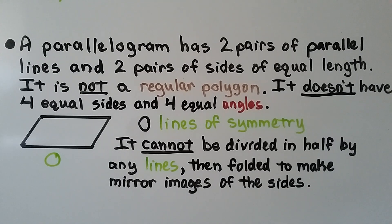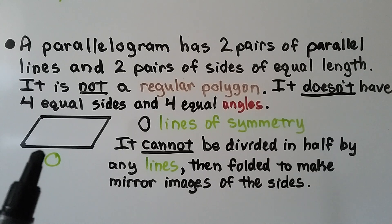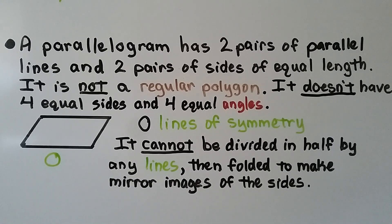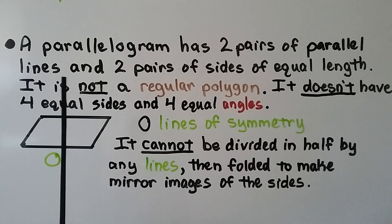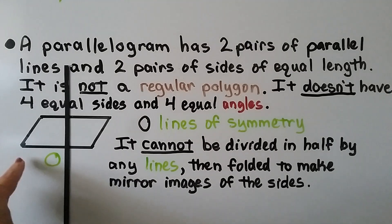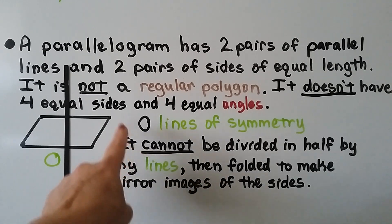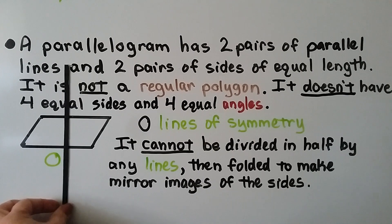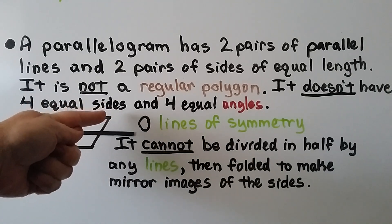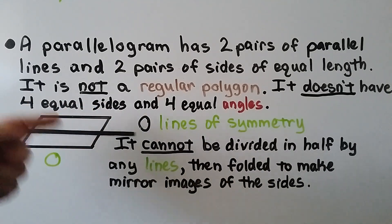A parallelogram has two pairs of parallel sides and two pairs of sides of equal length, but it is not a regular polygon — it doesn't have four equal sides and four equal angles. It has zero lines of symmetry. If you try folding it vertically or horizontally, the corners stick out and it won't make a mirror image.